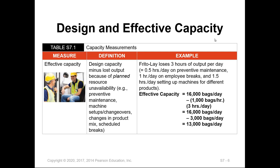Based on that, the effective capacity will be 16,000 bags per day minus 1,000 bags per hour multiplied by 3 hours lost. That is 16,000 minus 3,000, leaving us with 13,000 bags per day — and that is what we call the effective capacity. Although the design capacity for the machines is 16,000, the effective capacity is 13,000.